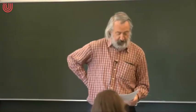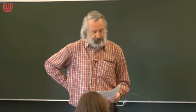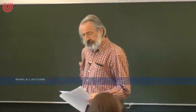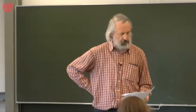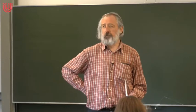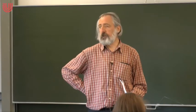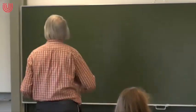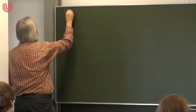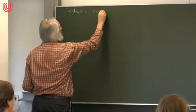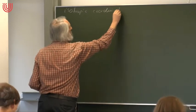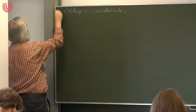Let's go on where we stopped last time. I'm now discussing various coordinate systems for the Schwarzschild spacetime. In addition to the traditional Schwarzschild coordinates, the first one I already began with last time was the so-called isotropic coordinates. Let me briefly remind you what this was because I want to add a few remarks which I forgot last time.